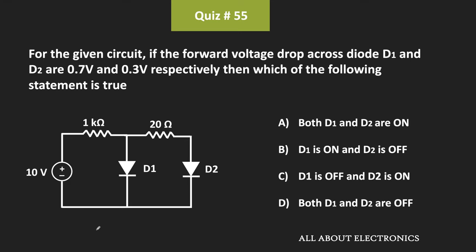Hey friends, welcome to the YouTube channel All About Electronics. In this question, we have been given a diode circuit where the voltage drop across diodes D1 and D2 are 0.7V and 0.3V respectively. We have been asked to find which of the following statements is true.